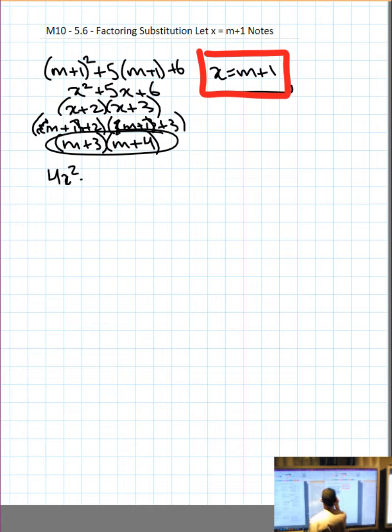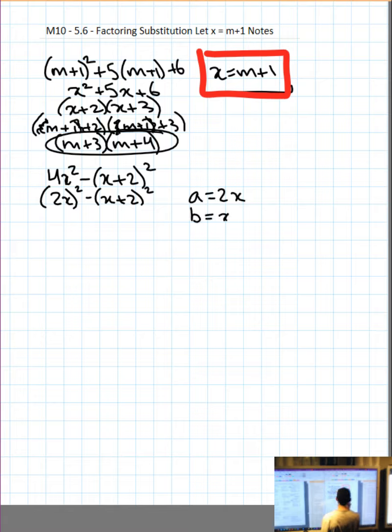Okay, 4x squared minus open bracket x plus 2 squared. Now this is just the difference of squares, it's hard to recognize it. But I'm going to figure out what's being squared. So we get 2x, that's being squared, and x plus 2, we already know is being squared. So I'm going to make a, 2x, and b, x plus 2, the two things that are being squared.